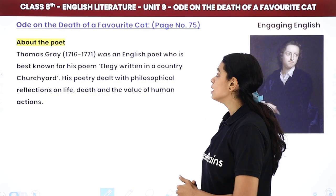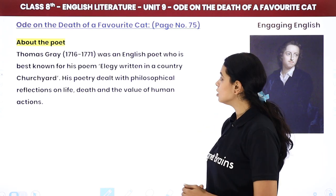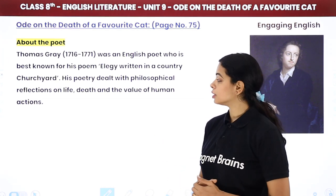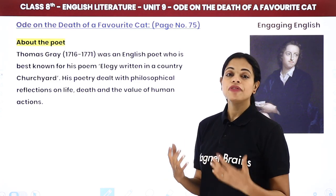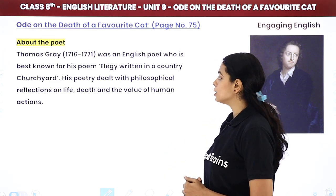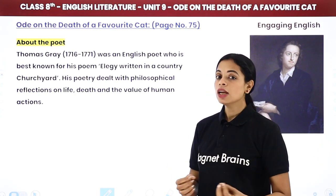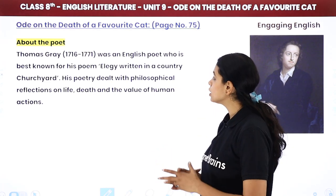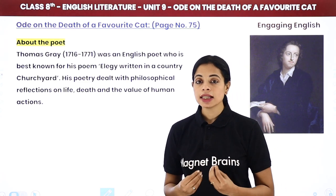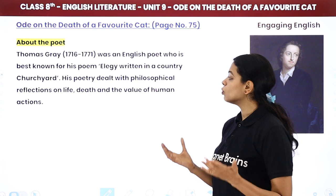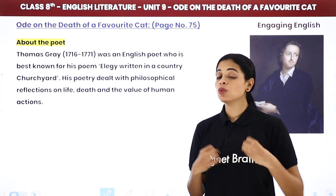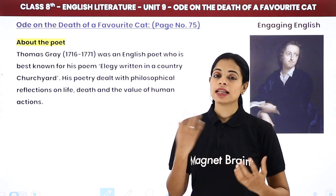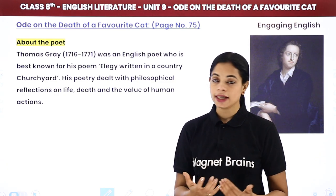Thomas Gray, 1716 to 1771, was an English poet who is best known for his poem 'Elegy Written in a Country Churchyard.' His poetry dealt with philosophical reflections of life, death, and the value of human action. Thomas Gray likhi kaafi saari poems mein life and death ke do important aspects se related cheezein rehti hain.